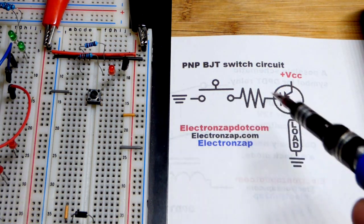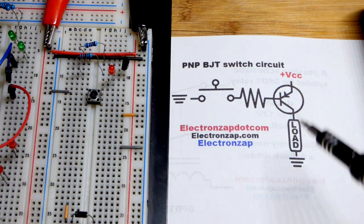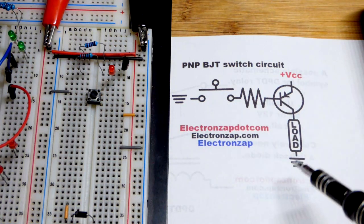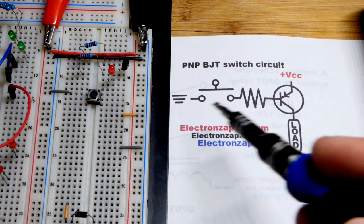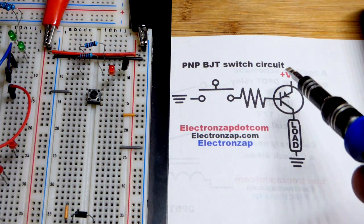But in any case, it's pretty straightforward. A small base current will control a larger collector-to-emitter current. So that's base-to-emitter, collector-to-emitter.